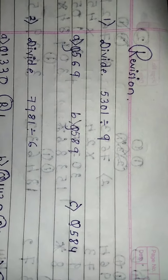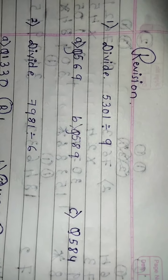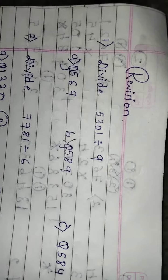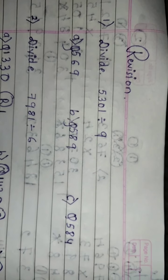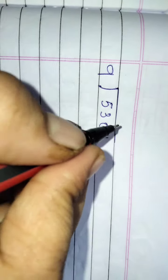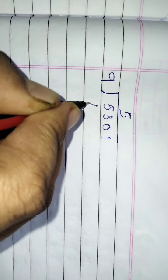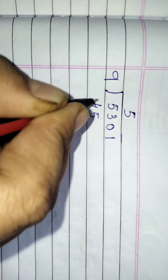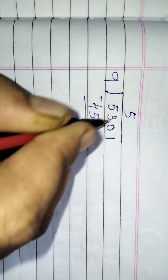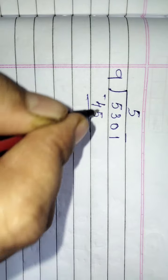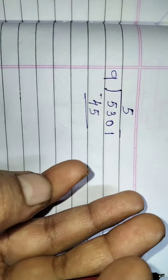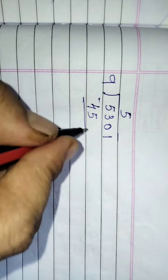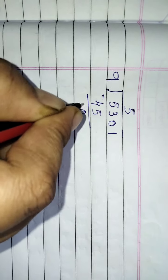Divide 5301 divided by 9. You have to see. 9 5's are 45. Counting to 53, we get 8, then 0.